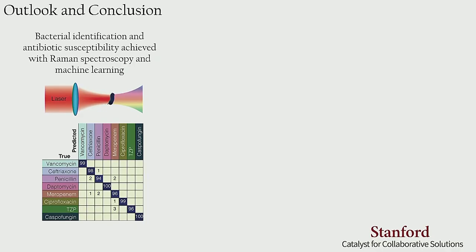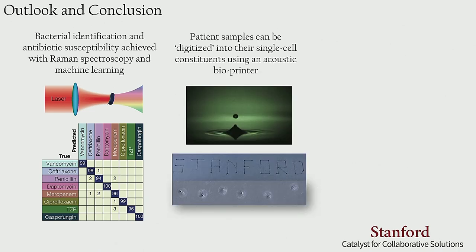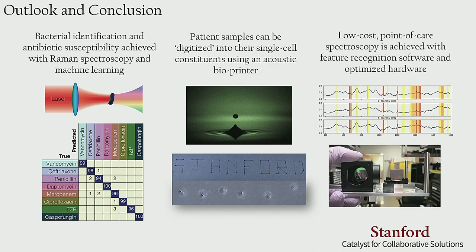To conclude, we have shown today that we can identify individual bacteria solely from their optical signatures, and we can digitize a 3D volume of a sophisticated cellular sample using a bioprinter to make it easy to use a low-cost spectrometer or camera to identify the bacteria. We would like to thank all our amazing team members who made this work possible, and of course the Catalyst Fund who brought us together and made all this possible. Thank you all for coming.